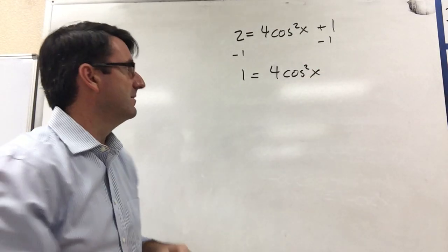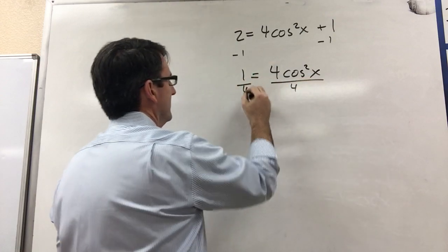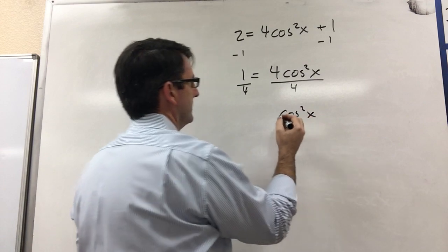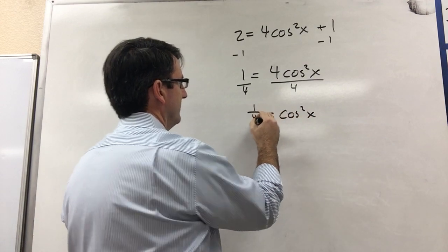Now we can divide both sides by 4. We get cosine squared x is equal to 1 fourth.